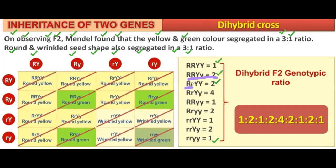Then capital R, small r, capital Y, small y — there are 2 organisms of this type. Capital R, small y, small y — there are 4 organisms. Capital R, small y — 1 organism. Capital R, small r, small y — 2 organisms. Small r, capital Y — 2 organisms. R small y — 2 organisms. R small r small y — and the fully recessive is 1.